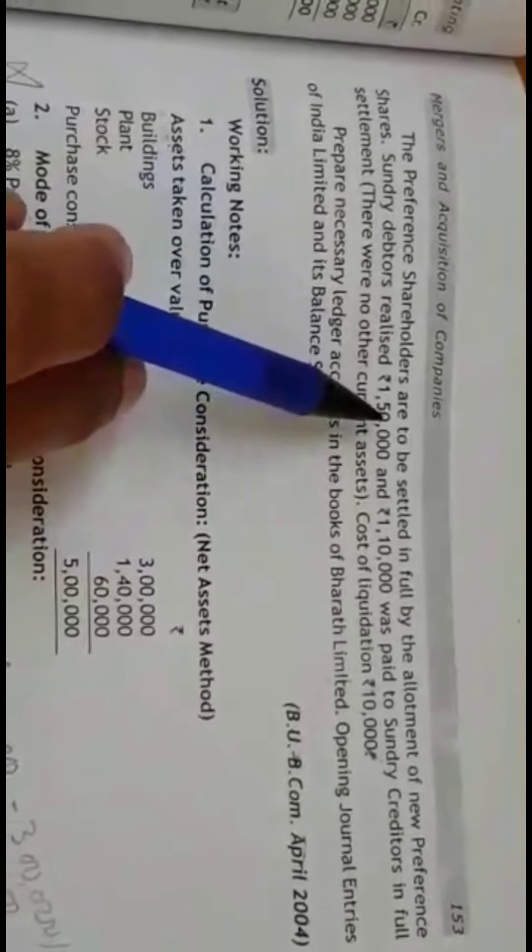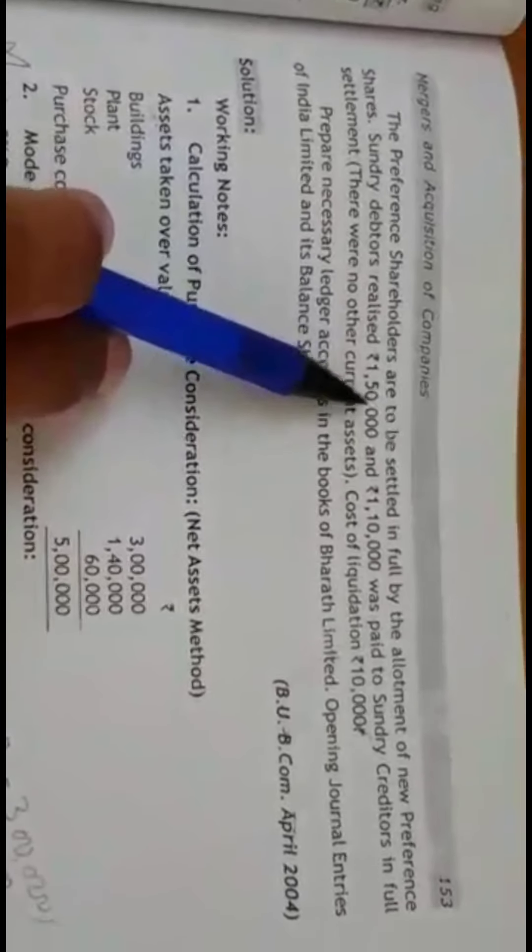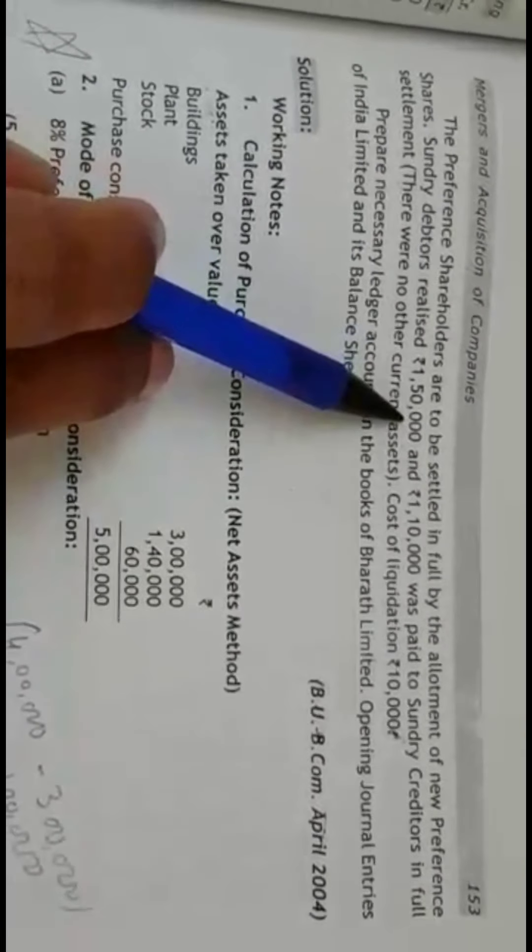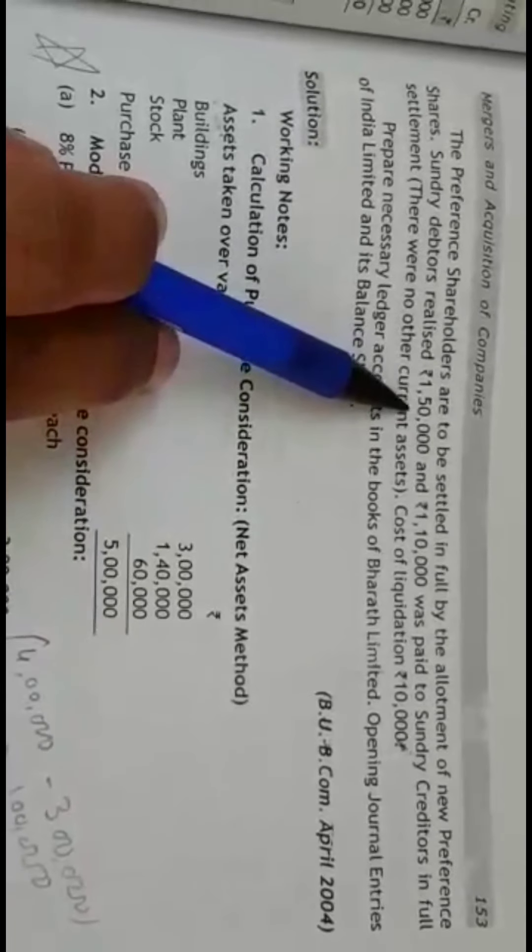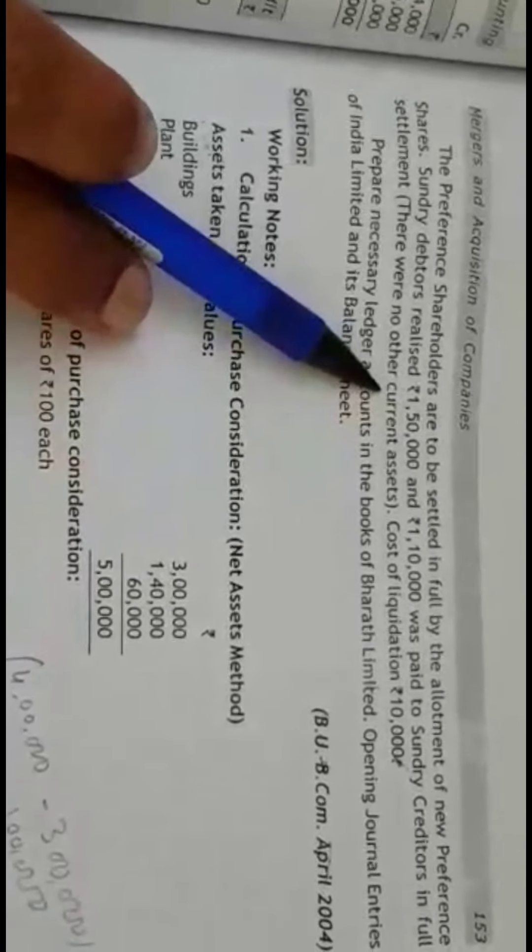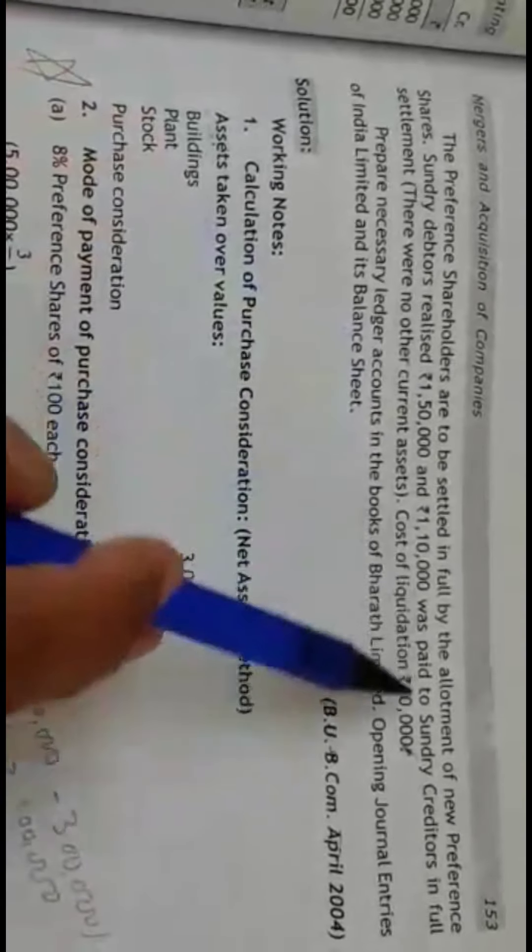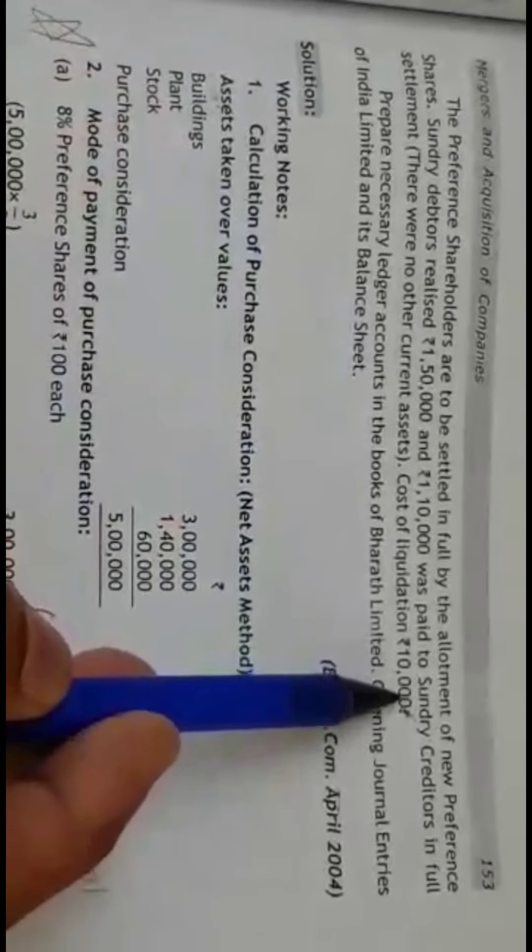Rs. 1,10,000 was paid to sundry creditors and debtors realized Rs. 1,50,000. This amount you have to show it in the realization account. Debtors realized, the general entry is cash account debit to realization account. In realization account, you have to show by cash account.